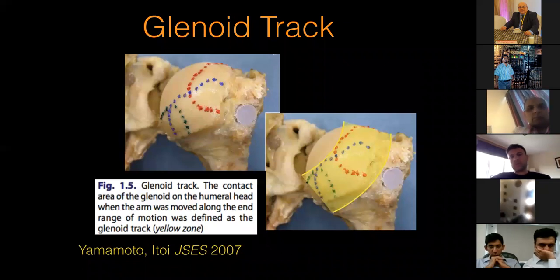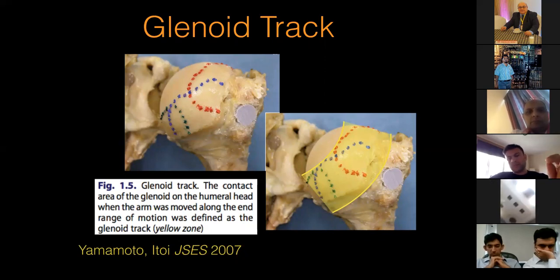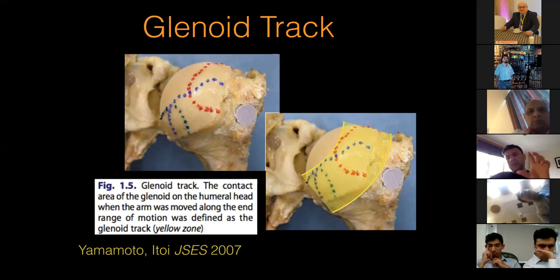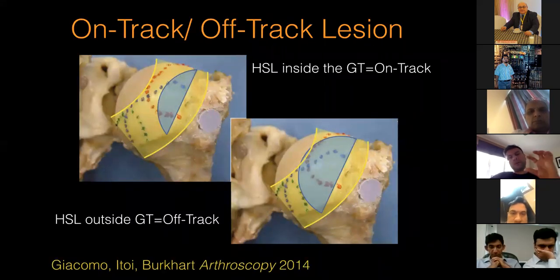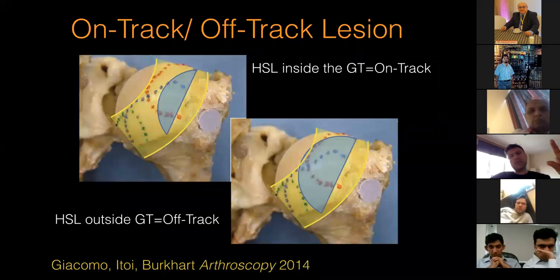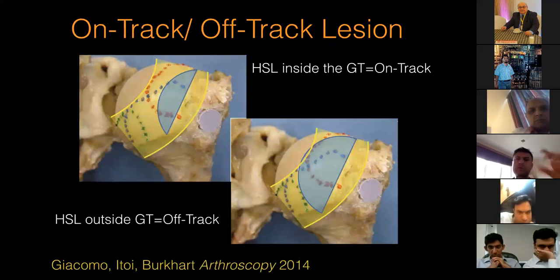Yamamoto came up with the idea of glenoid tracking — basically the contact area of the glenoid on the humeral surface. They looked at the contact area of the glenoid on the humeral head in different positions: zero, 30, and 60 degrees of abduction. They came up with the glenoid track concept — the amount of glenoid which comes in contact with the humeral head. The width of the glenoid track is about 83 percent of the glenoid diameter.